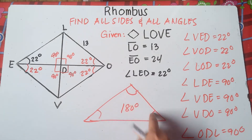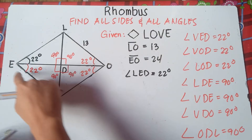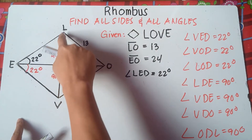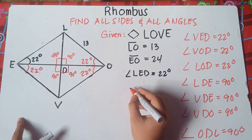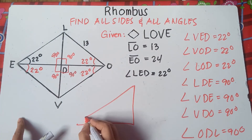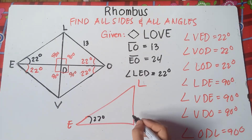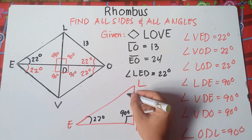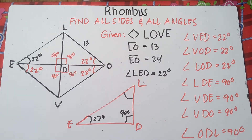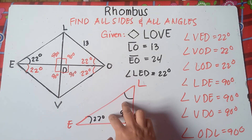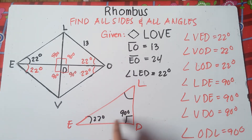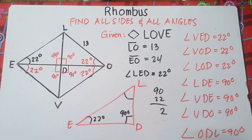So if we draw triangle LDE — with this being 22 degrees and this being 90 degrees, according to our illustration — we need to find the remaining angle. Since we know the sum of interior angles must be 180, we just add the known angles and subtract from 180. So 90 plus 22 is 112.